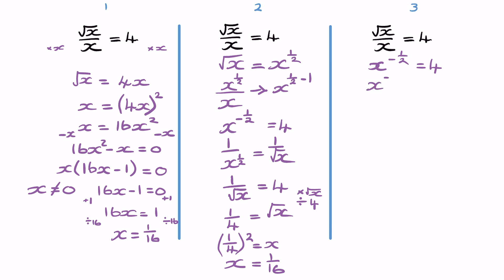On this side, x to the minus 1 half raised to the negative 2. And on this side, 4 to the negative 2. So here I would have to multiply the exponents.